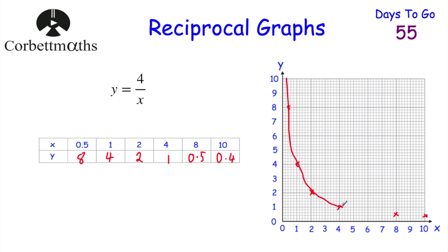It looks something like this — a nice curve that goes through those points. Now, you'll notice it doesn't actually reach the x-axis, because no matter what, we're doing 4 divided by something — even 4 divided by a million would still be something. So this graph will approach the x-axis but never reach it. Likewise, we can't divide by 0, so the graph will just keep going up but never reach the y-axis. The x-axis and y-axis are what we call asymptotes — the graph will never reach them.